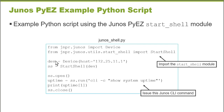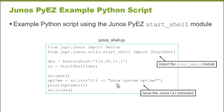I'll declare a couple of variables. The dev variable represents a Device object for the target host, which you can modify to match a device in your environment. The ss variable represents a StartShell object associated with the target device. To open the connection, I use the StartShell open method to establish a shell connection with the target device. Then I have an uptime variable, and I use the StartShell run method to execute the Junos CLI command — in this example, show system uptime. Then I print the output of that command using the standard Python print library.